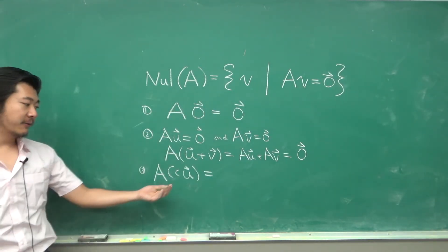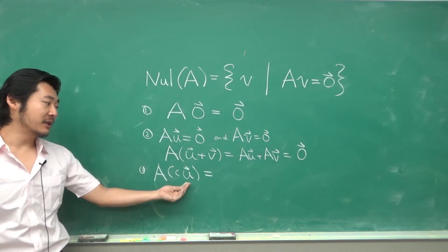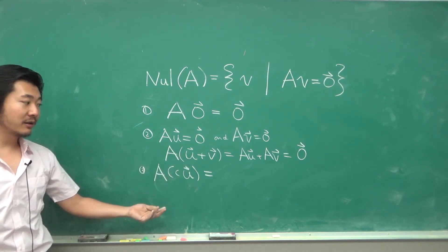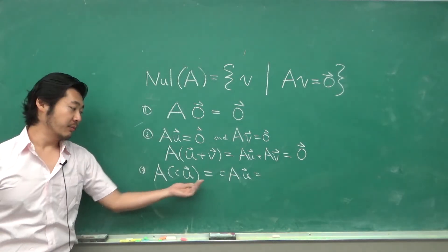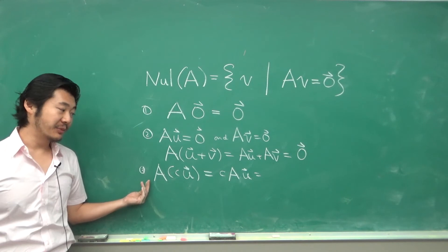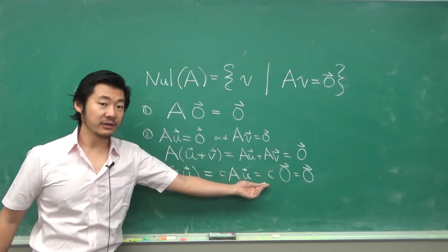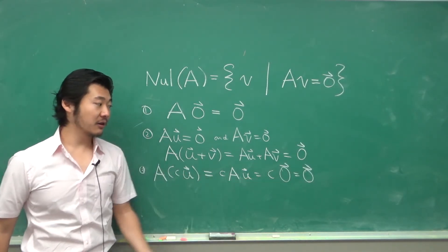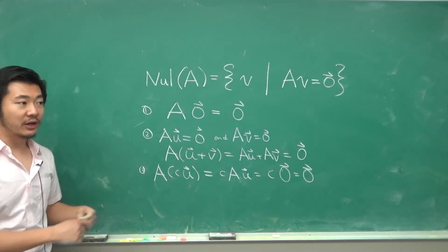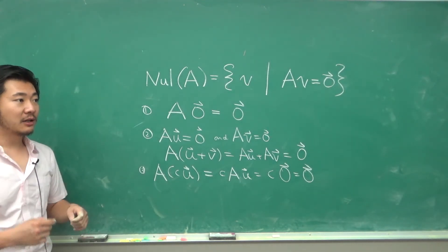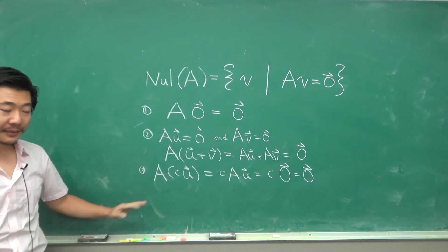Finally, if we stretch or shrink an element in the null space by some scalar, since multiplication is linear, the scalar moves outside: we get the scalar times A times v, which is the scalar times a zero vector, which is still zero. So scalar multiples of vectors in the null space stay in the null space.